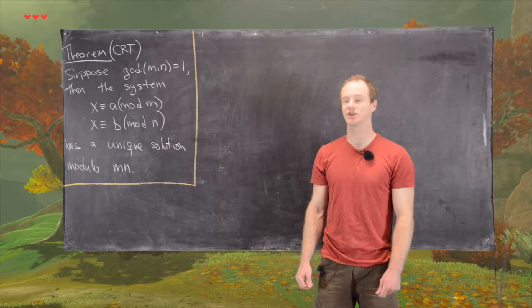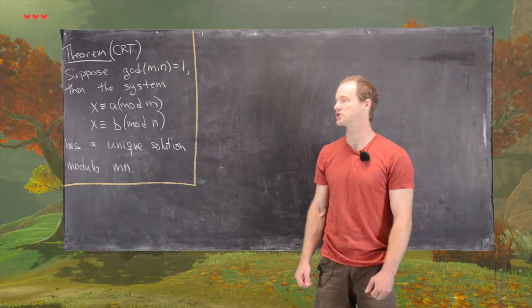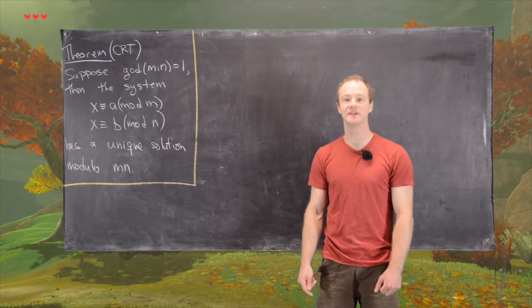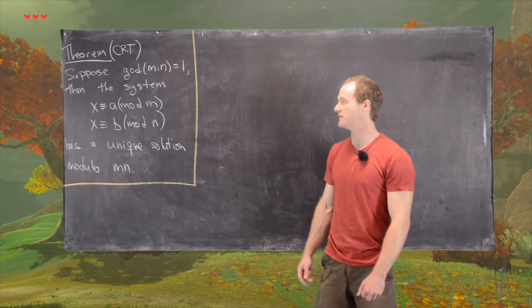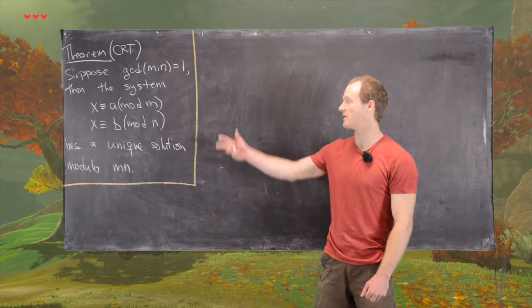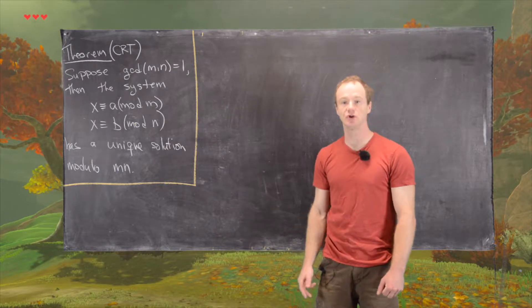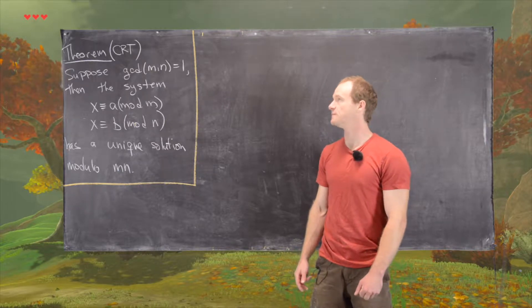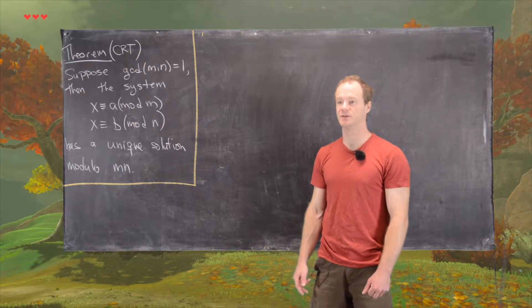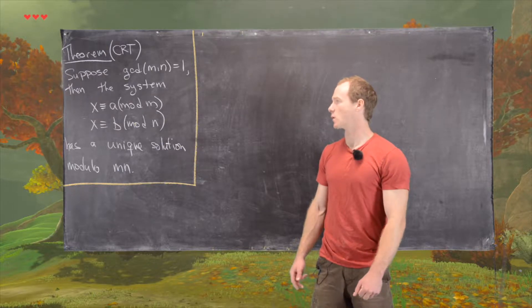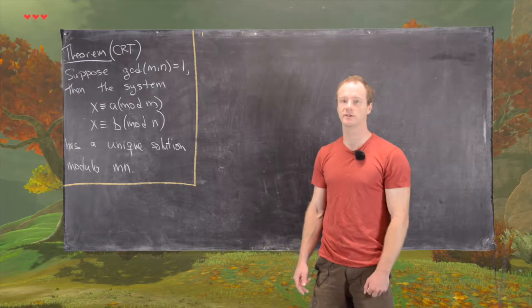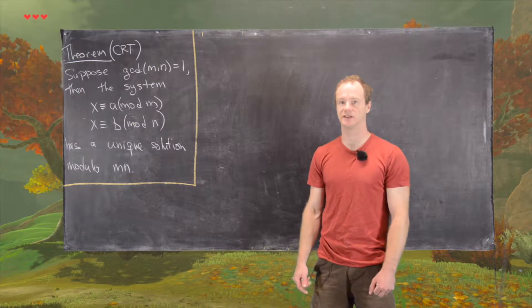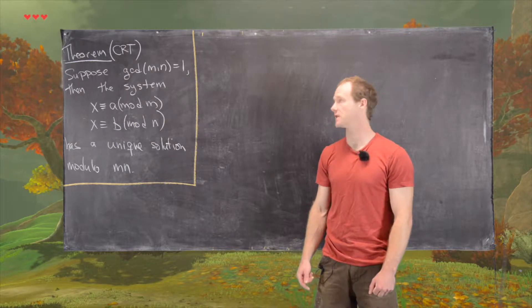In this video I want to look at a slight generalization of the Chinese remainder theorem. I'll remind you of the Chinese remainder theorem in the very special case where we only have a system of two modular congruences, but this can be generalized to N or K congruences. And the theorem I will present can also be generalized to K congruences, although I won't do that here.